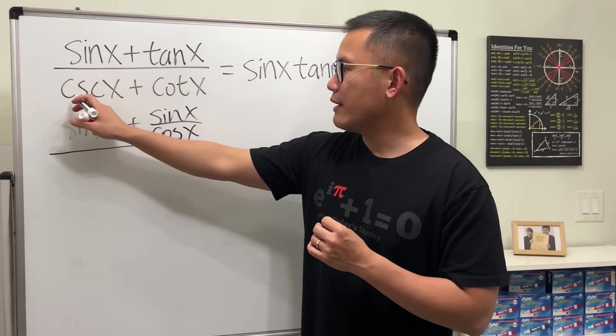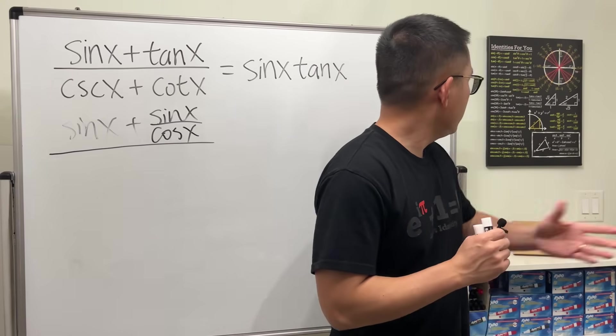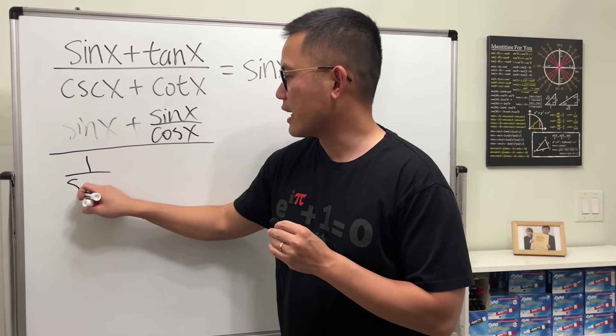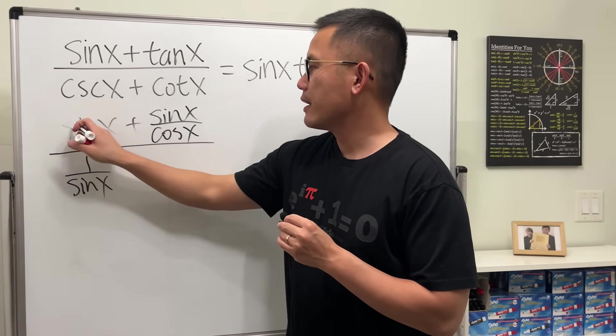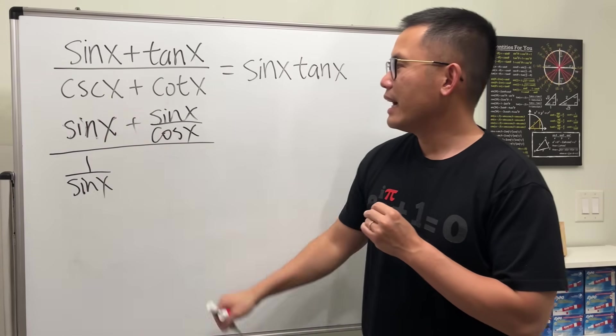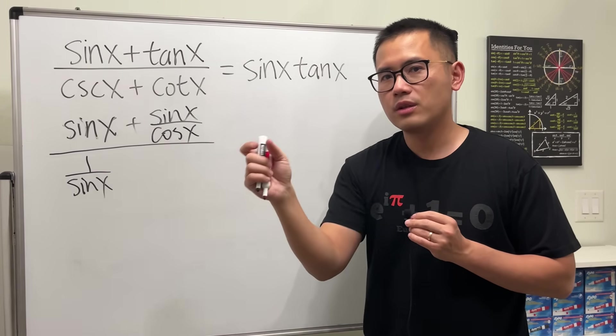Over here we have cosecant x, and you have to remember all the identities. This is the same as one over sine x. And for cotangent x, you have to remember that's cosine x over sine x.